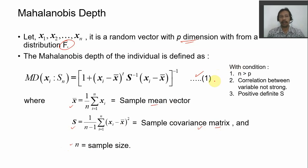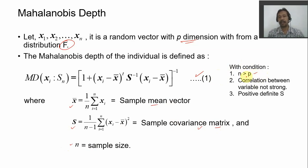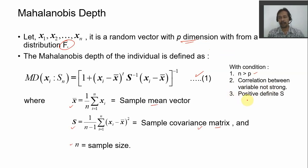The Mahalanobis depth has some conditions. First, n should be greater than p — the sample size should be greater than the number of variates, i.e., the dimension. Second, the correlation between variables should not be strong. Third, we must have a positive definite covariance matrix.